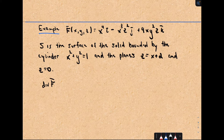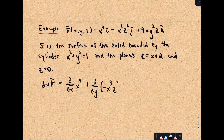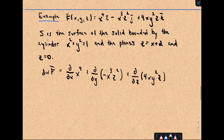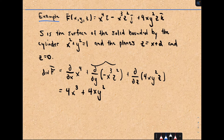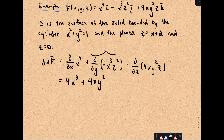Again, let's compute the divergence. We take the partial with respect to x of x⁴, plus the partial with respect to y of −x³z², plus the partial with respect to z of 4xy²z. The partial of x⁴ with respect to x is 4x³. The middle term doesn't involve y, so its partial with respect to y is 0. The partial of 4xy²z with respect to z is 4xy². So the divergence is 4x³ + 4xy², which I factor as 4x(x² + y²).